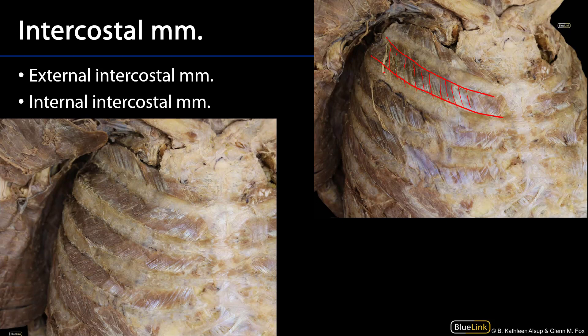If you think about putting your hands in your pockets, those would be running in the same direction as the fibers of the external intercostal muscles. The external intercostal muscles are going to pull the ribs outward and upward. By pulling the ribs outward and upward, this is going to increase the volume of the thoracic cavity, decrease pressure, and therefore be helpful for the process of forced inhalation.